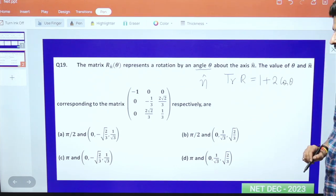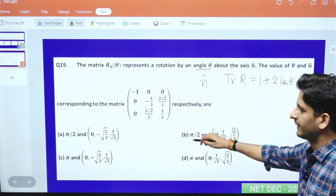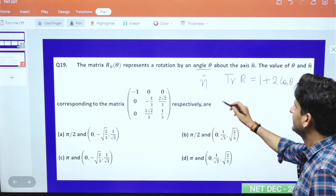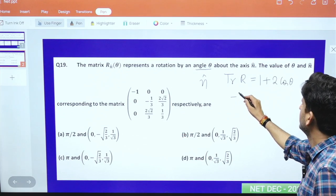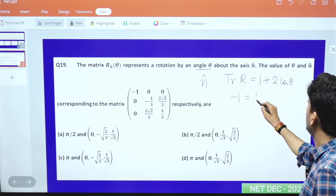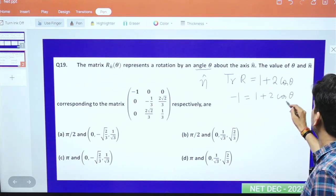The trace here is 1/3 minus 1/3 minus 1, which equals minus 1. Setting this equal to 1 plus 2 cos theta, we get cos theta equals minus 1, so theta equals pi.